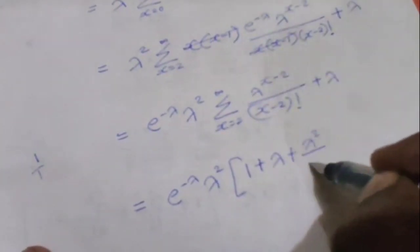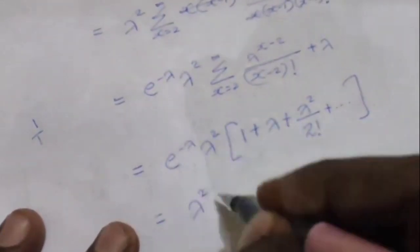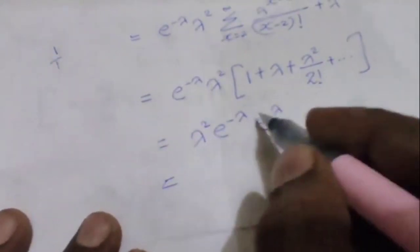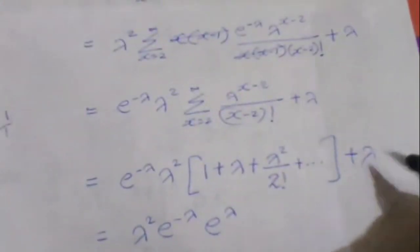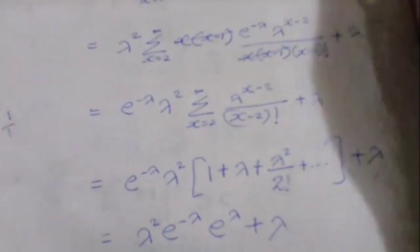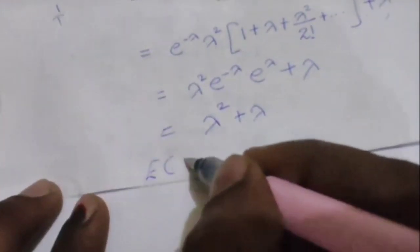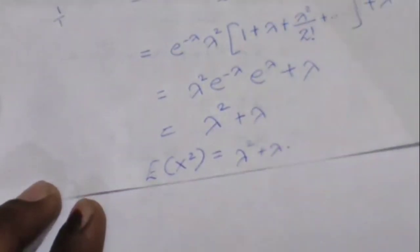So we get lambda squared times e to the power minus lambda times e to the power lambda plus lambda. Since e to the power minus lambda times e to the power lambda equals 1, E of x squared equals lambda squared plus lambda.